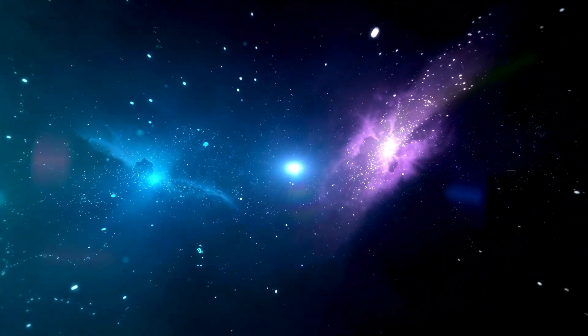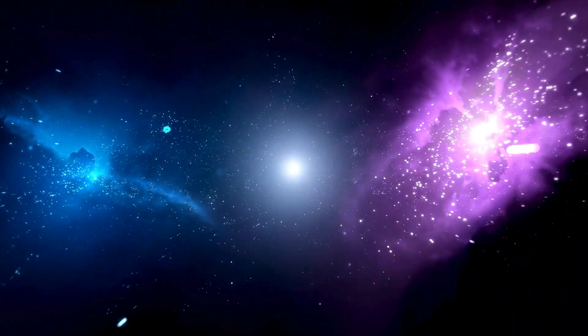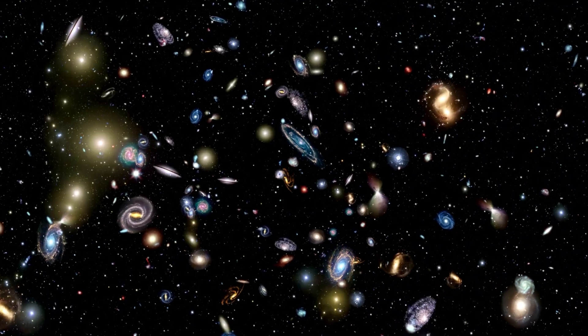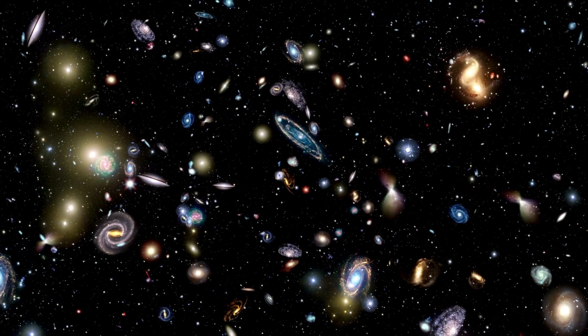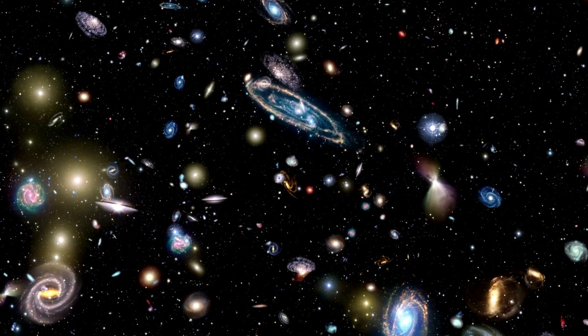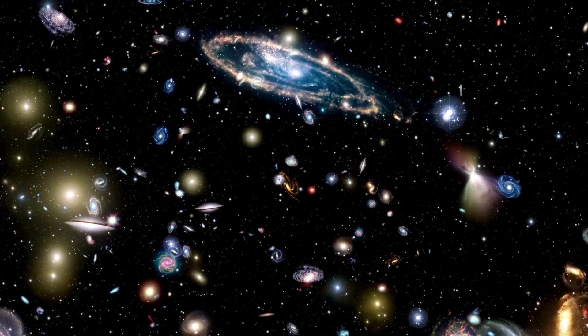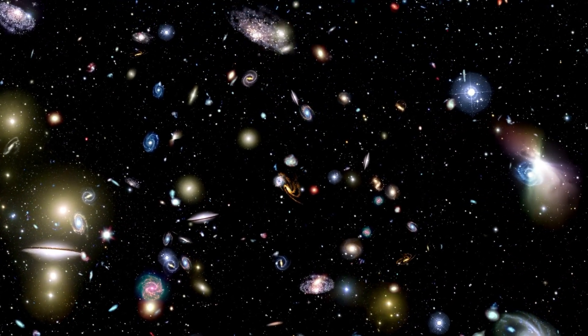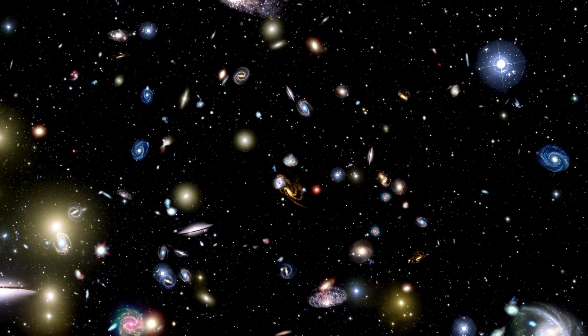This idea of dark matter also comes from looking at even bigger things called galaxy clusters. People noticed that the galaxies in these clusters were moving too fast, faster than what we would expect just from the matter we can see. It's like there's some invisible stuff, about 50 times more than what we see, helping to keep everything in place.